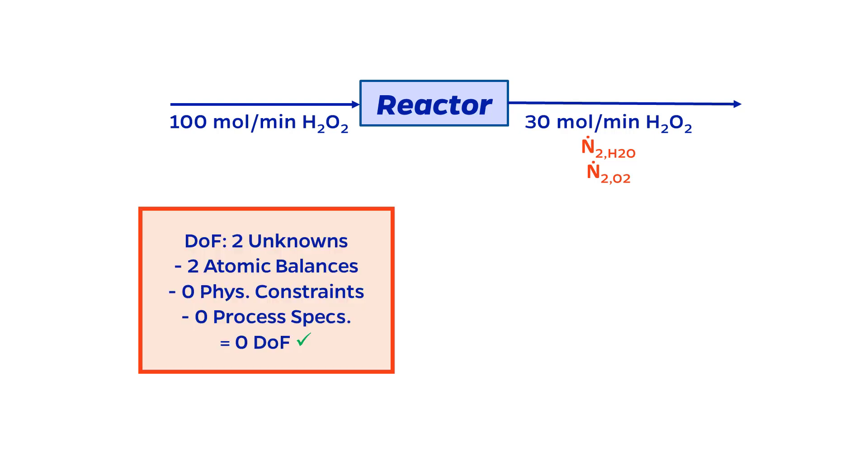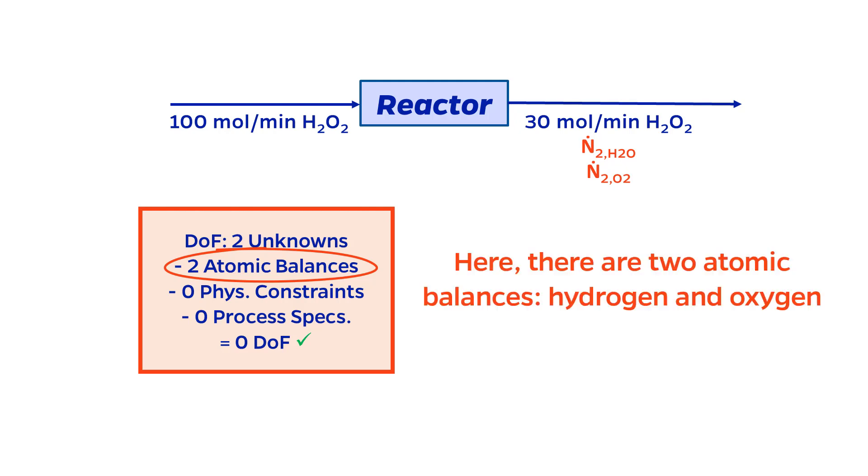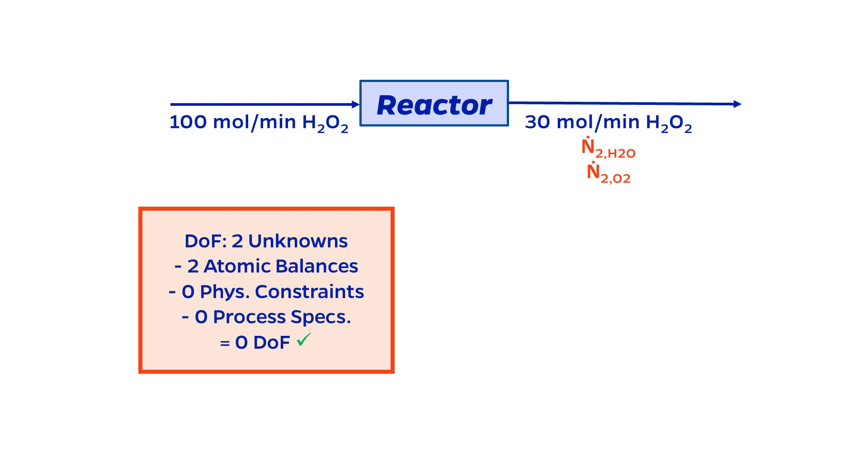In the atomic method degrees of freedom, count the number of unknowns as usual. Just like last time, the two unknowns are the two requested flow rates. There is no need to add degrees of freedom for any chemical reactions, because we are ignoring them. The number of material balances is equal to the number of independent atomic species. In this case, I have two atoms, hydrogen and oxygen. As before, physical constraints and process specifications would also count here, but I don't have any in this example. So the degree of freedom is simply 2 minus 2 equals 0.